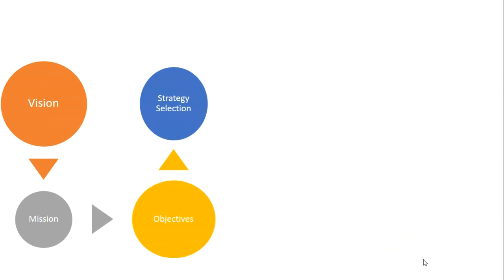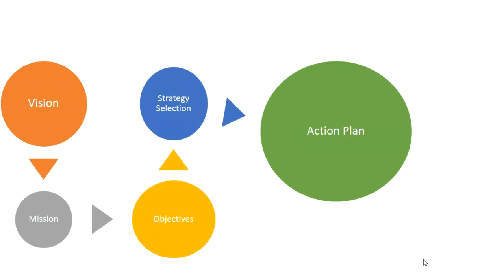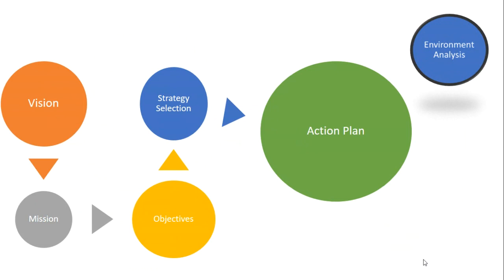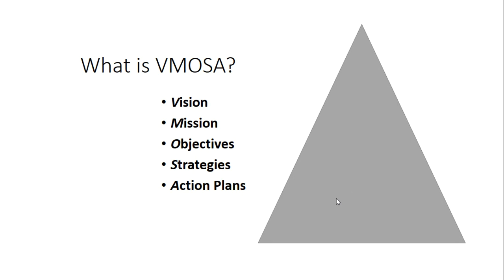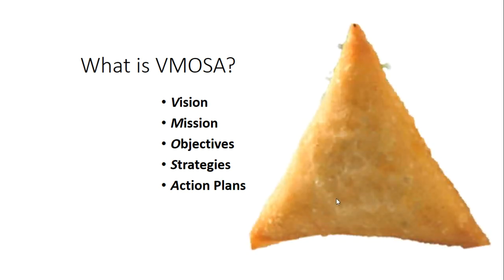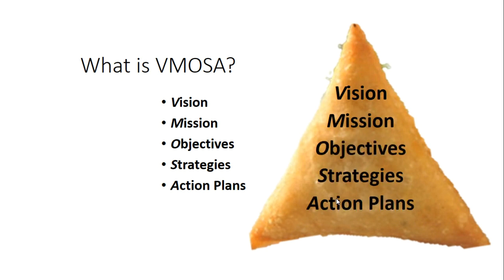Let us open the strategy. In strategic planning, the key elements are: vision, mission, objectives, strategy, and action plan. These come together in a triangular shape — levels build upon one another, from vision and mission down through objectives, strategy, and action plan.